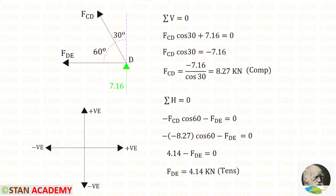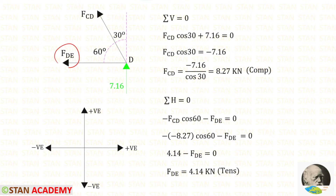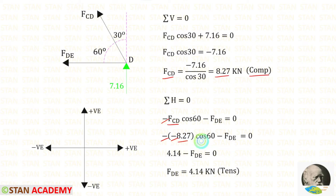Now applying sigma H = 0 at joint D, we take horizontal and inclined forces. To make FCD horizontal we need 60°, so we multiply FCD by cos 60. When made horizontal, FCD acts towards the left, so it is negative. FDE also acts towards the left, so it is negative. Since FCD = 8.27 kN compressive, applying it as negative and negative × negative = positive: 8.27 × cos 60 = 4.14. Finally, FDE = 4.14 kN tensile.